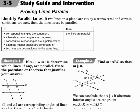If two lines in a plane are cut by a transversal, and certain conditions are met, then the lines must be parallel. Before we said if lines are parallel, then certain things are true. Now we're saying it the other way: if certain things are true, then the lines are parallel.